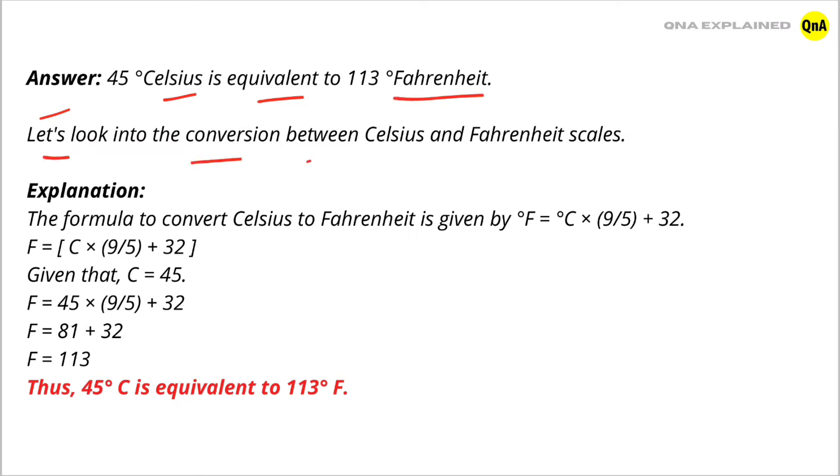Let us look into the conversion between Celsius and Fahrenheit scales. Explanation: The formula to convert Celsius to Fahrenheit is given by F = (C × 9/5) + 32.